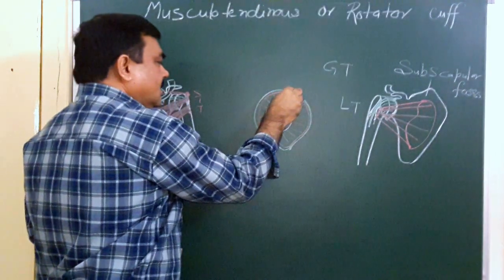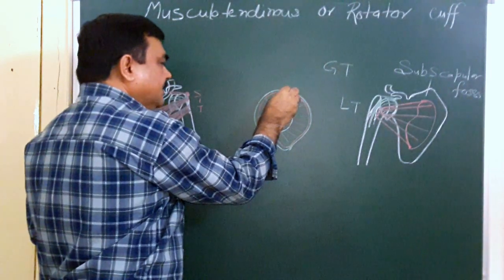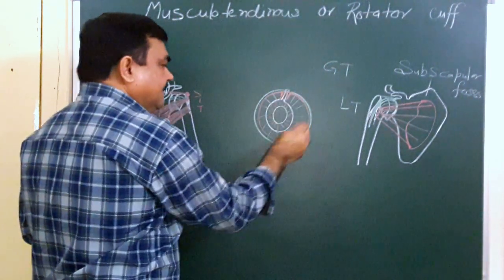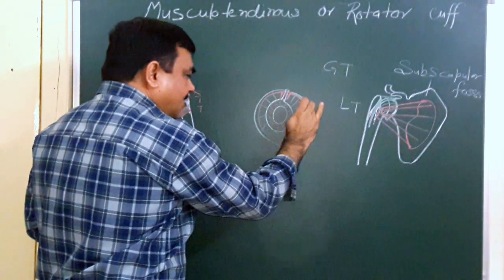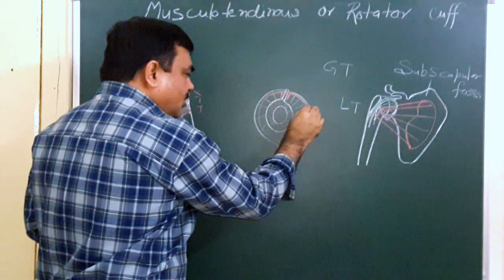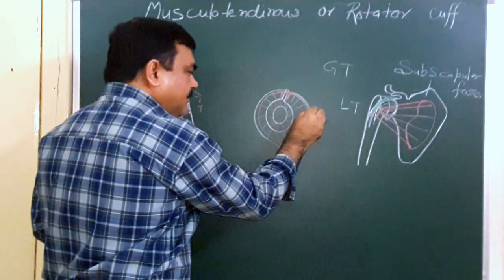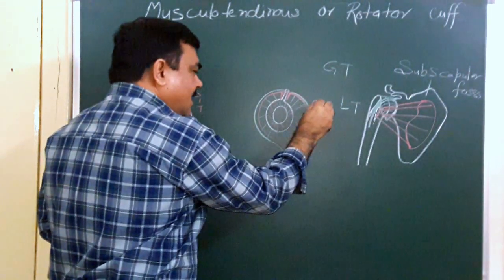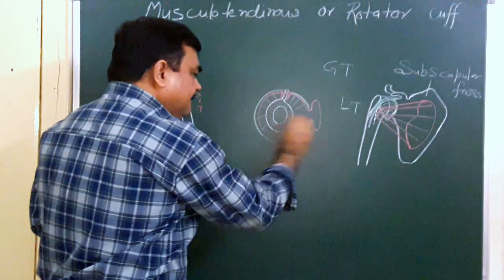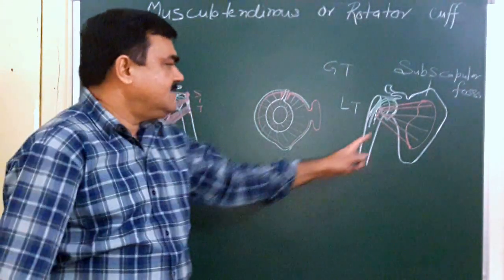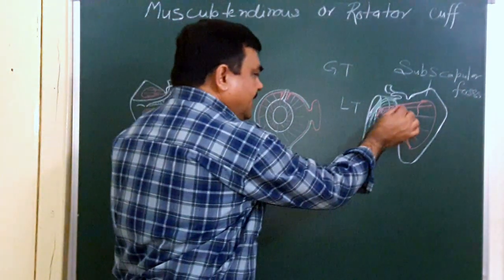The long head of biceps passes through the joint, and clearly there is a gap through which the synovial cavity communicates with a bursa — the subscapular bursa — present here.